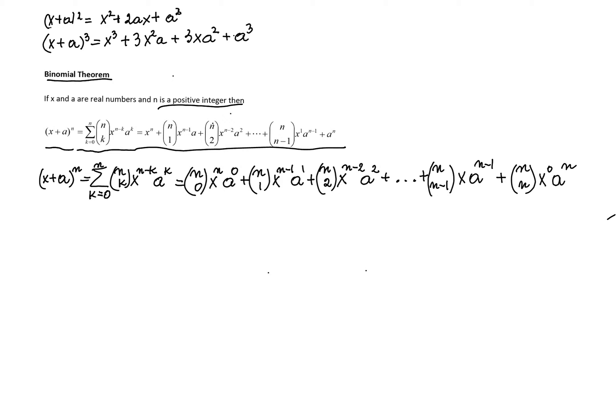Notice the pattern of coefficients. We start with n choose 0, then we go n choose 1, n choose 2, and so on, until we go to n choose n minus 1, and n choose n.